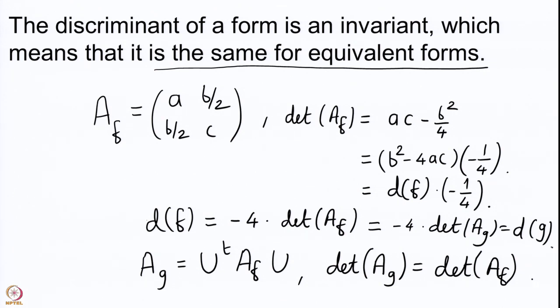We have answered all three questions from the last lecture. First, every number congruent to 0 or 1 mod 4 is the discriminant of some form — we proved this affirmatively by writing down the principal forms. Second, the discriminant is an invariant: if f is equivalent to g, their discriminants remain the same. Finally, one use of the discriminant is that it determines the sign behavior of the value set of the quadratic form. We will see more applications of discriminants in the coming lectures. Stay tuned — thank you.